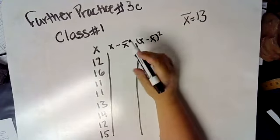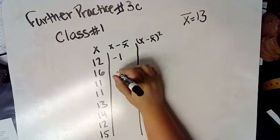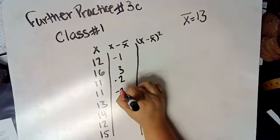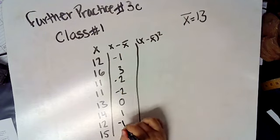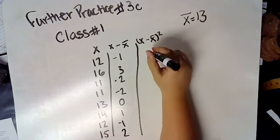So we're going to take our x minus x bar, which gives us negative 1, 3, negative 2, negative 2, 0, 1, negative 1, and 2. We're going to go ahead and square all of this.